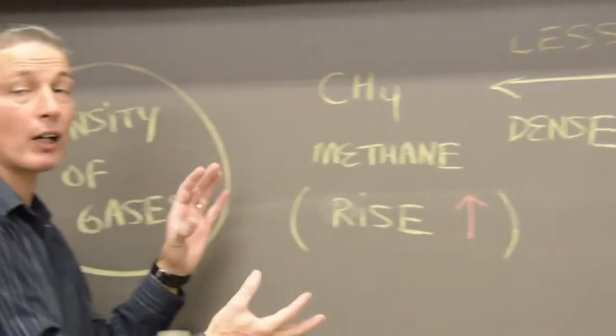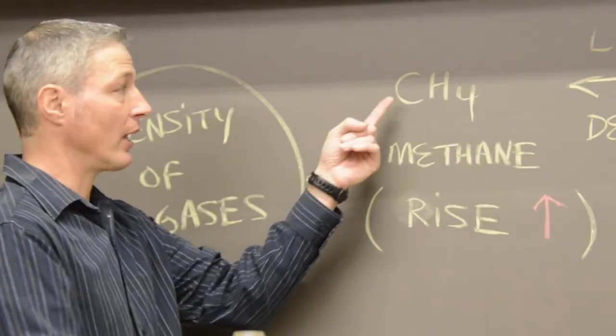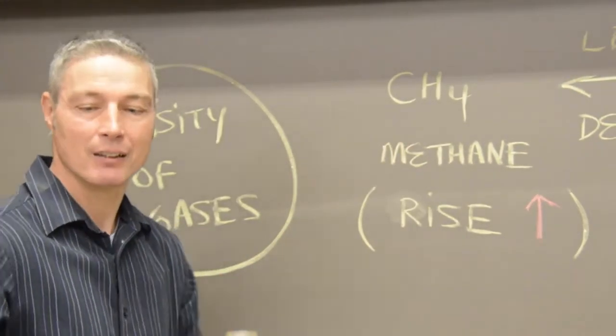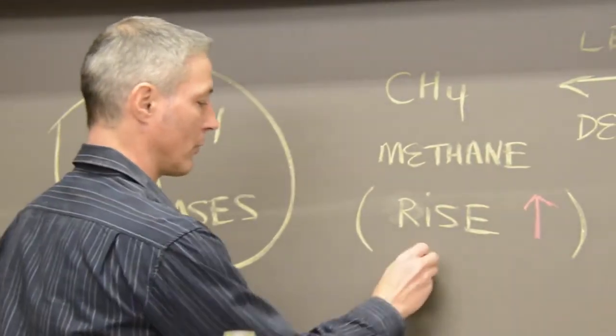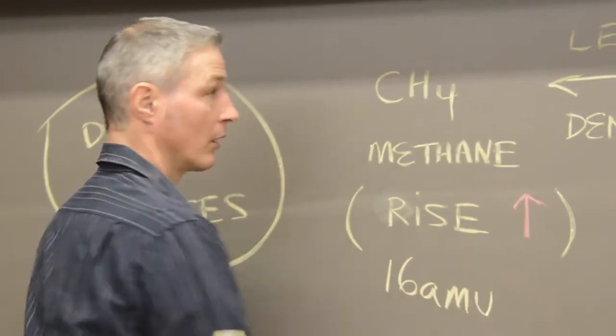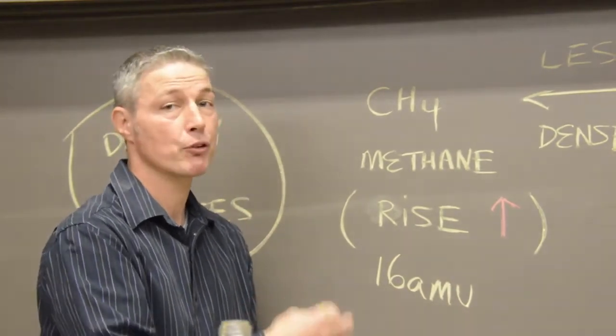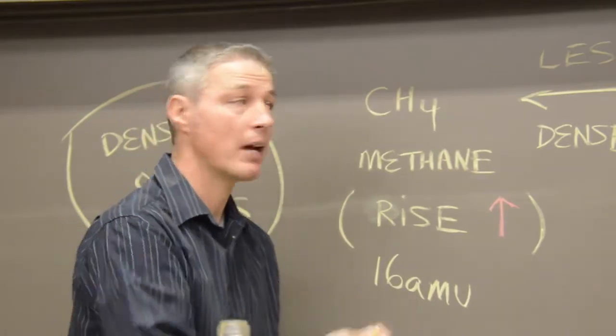What we're going to do next is talk about methane. Methane with a carbon that's 12, hydrogens are one each. 16 atomic mass units. That rises and that's what's in natural gas. 95% of natural gas is methane.